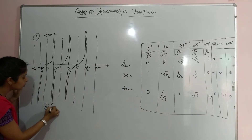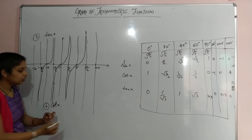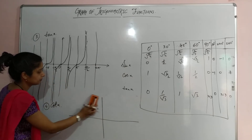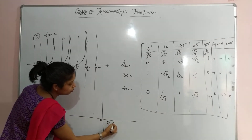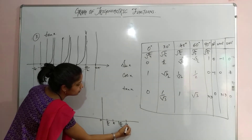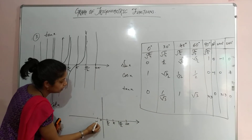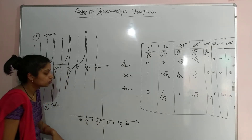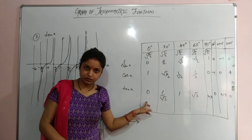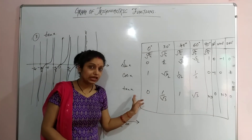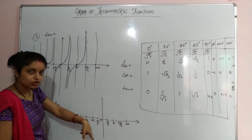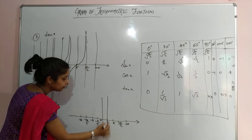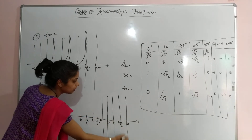The fourth function is cot x. Cot x is just similar to tan x — the difference is that cot is the reciprocal of tan. Setting up the same axis values: at 0°, tan is 0, so cot will be 1/0, which is infinity. At π/2, tan is 1, so cot is 1. This gives us the starting behavior of the cot graph.